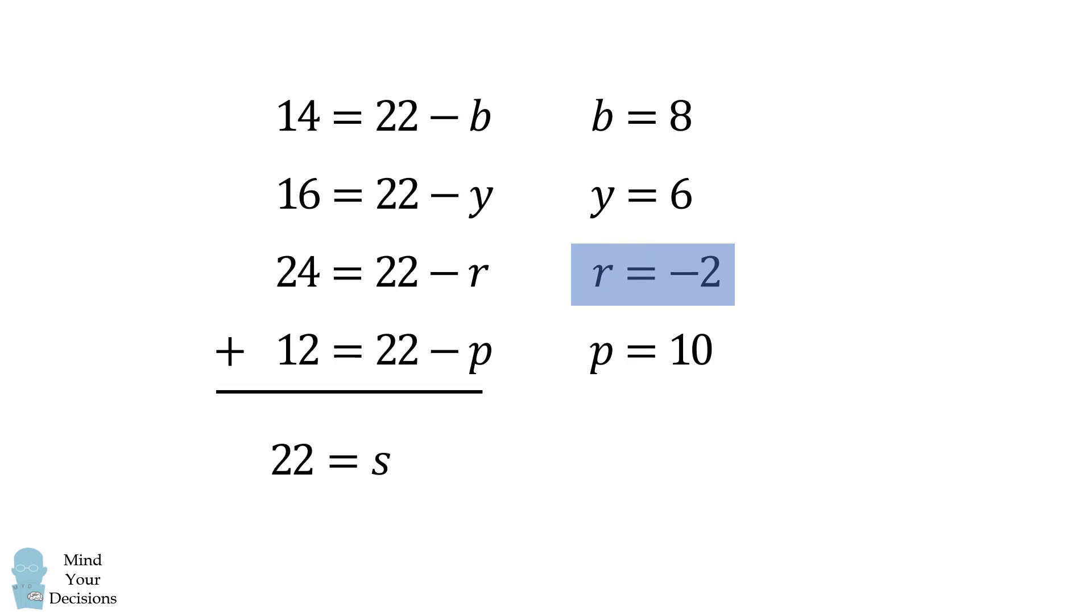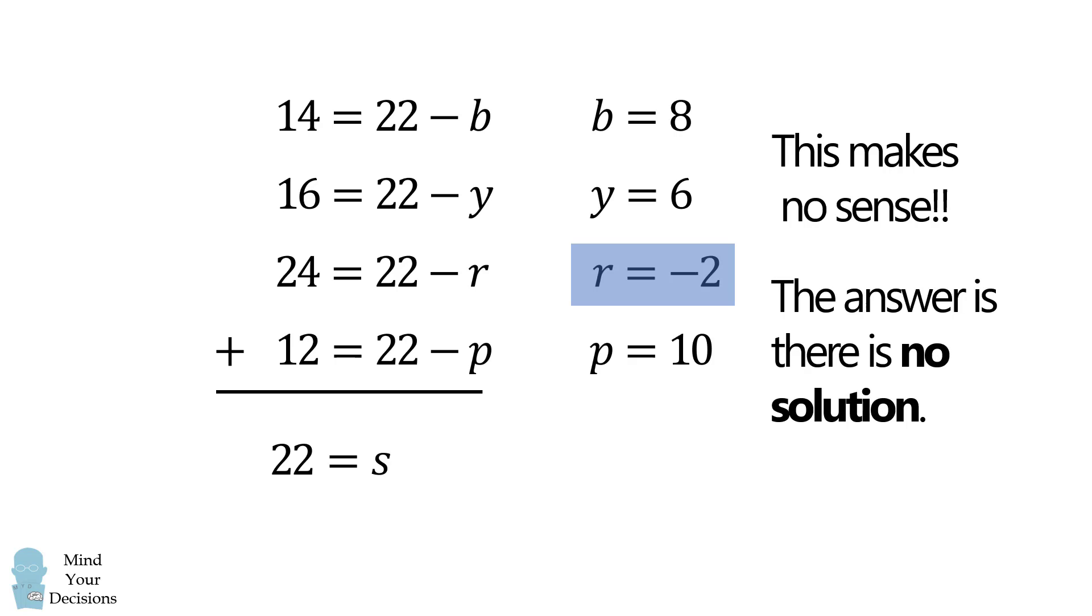But wait! r is equal to negative 2. This makes no sense. The number of red balls should be a non-negative number. Therefore, this entire problem is nonsensical. The correct answer is that there is no solution.